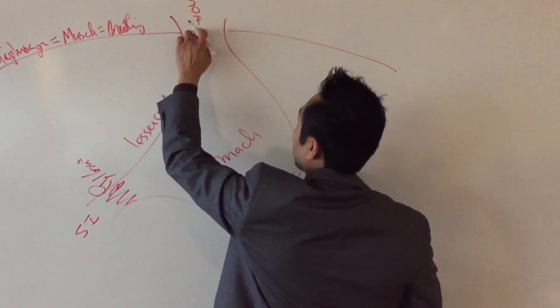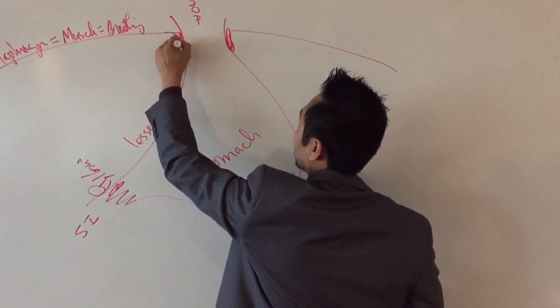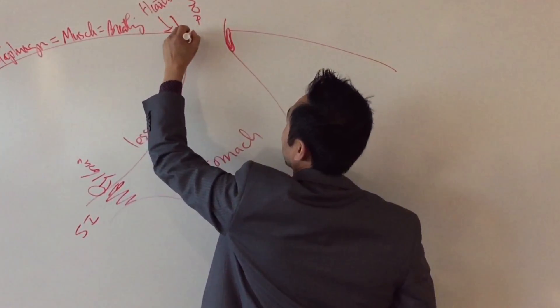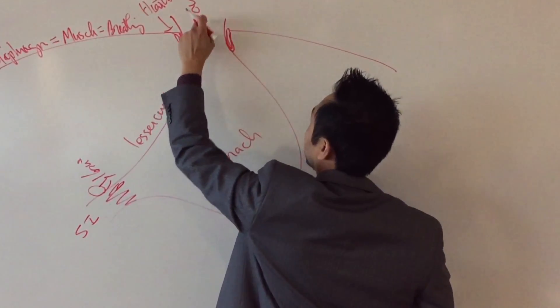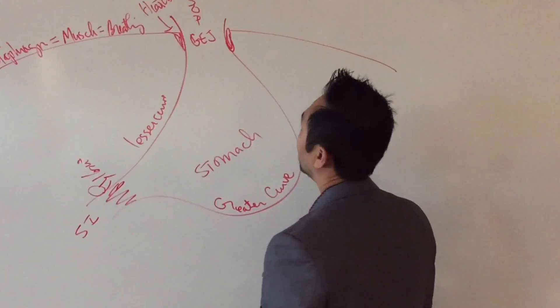This is your esophagus coming down through your chest. Right? Your esophagus runs down the middle of your chest here, right next to your heart. These are your lungs. Where it comes through the hiatus, the opening of your diaphragm. GE junction. Gastroesophageal junction.